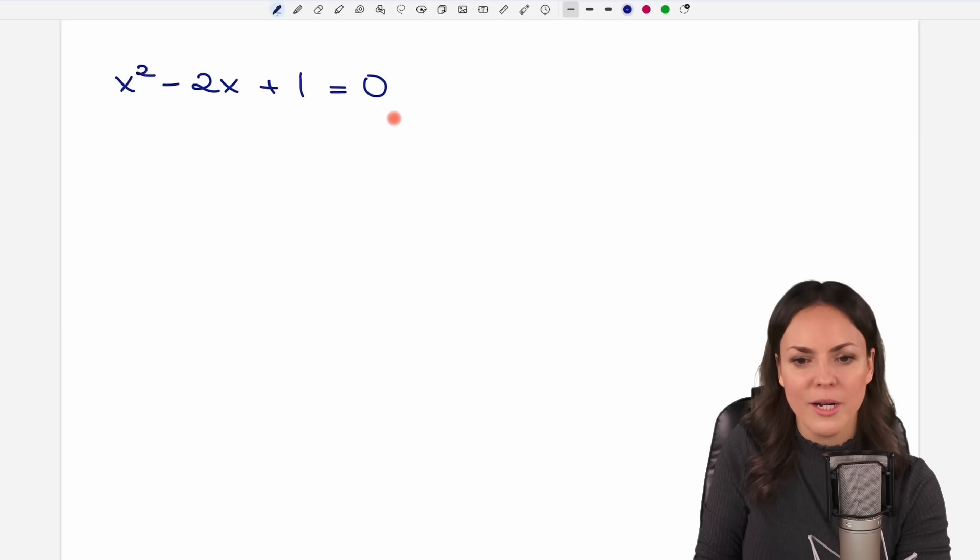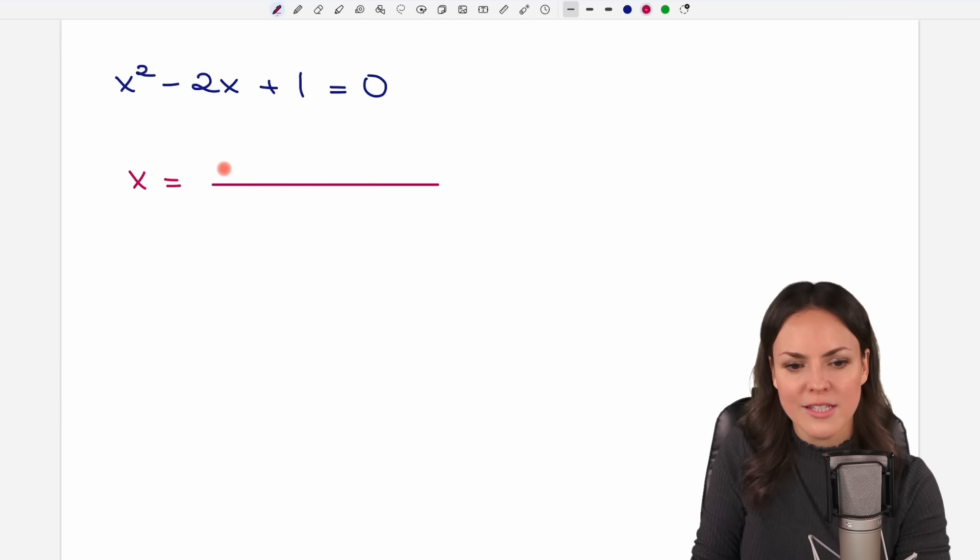So we take our equation and let's write down the formula once again so that we know what we have to do. It is a fraction and consists of minus b plus minus the square root of b squared minus 4ac divided by 2a.